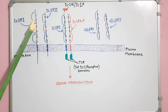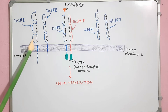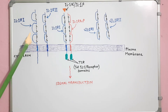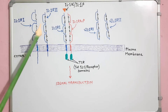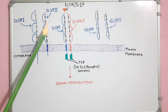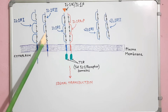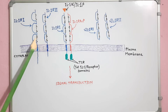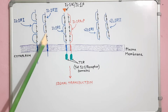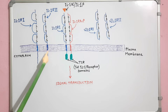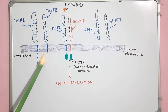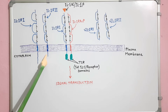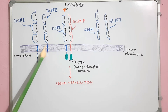This receptor is capable of signal transduction when it binds with IL-1 alpha or IL-1 beta ligands. The type 2 receptor is a 60 kilodalton protein and is similar to the type 1 receptor in its extracellular and transmembrane regions.